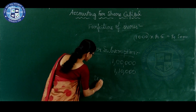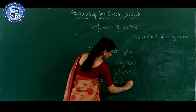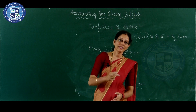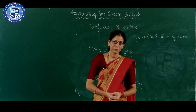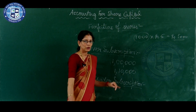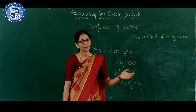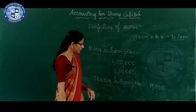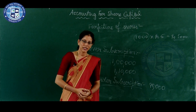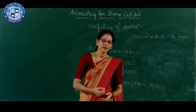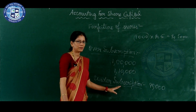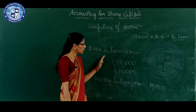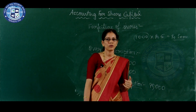Under subscription means when the company receives applications less than the number of shares offered to the public. For example, even though the company issued 1 lakh applications to the public, it received only 90,000 applications from the members. Then it is called as under subscription. In both over subscription and under subscription cases, we have to solve problems. I will explain how to pass journal entries in the case of over subscription or under subscription in the next class.